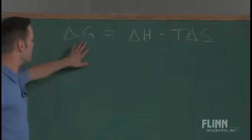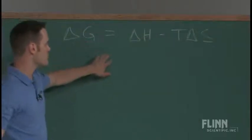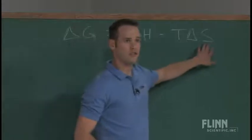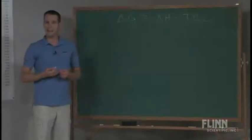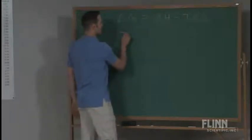So in this equation, we're looking at the relationship between free energy, enthalpy, and entropy changes for reactions. In this reaction, if it's spontaneous, delta G has to be negative in sign.